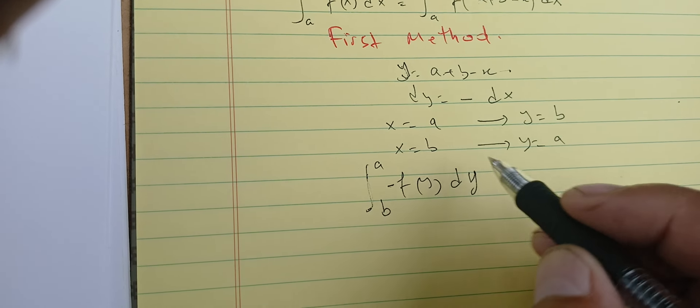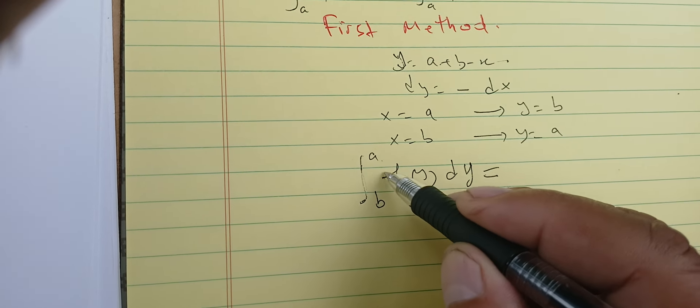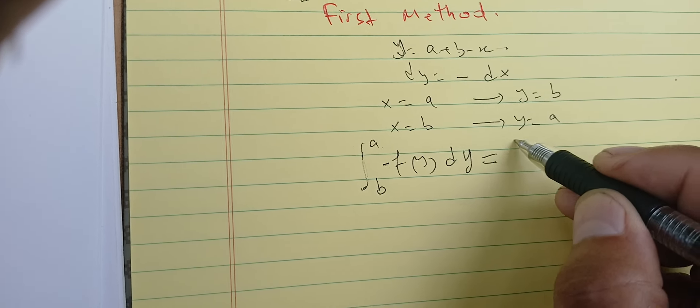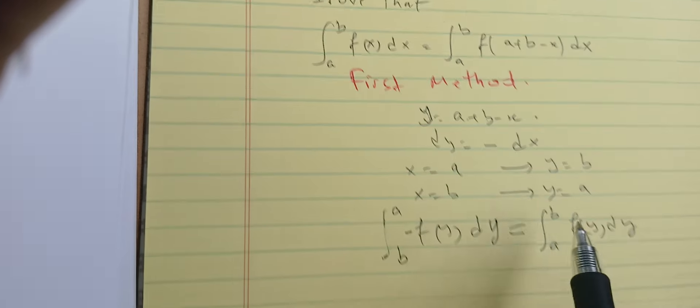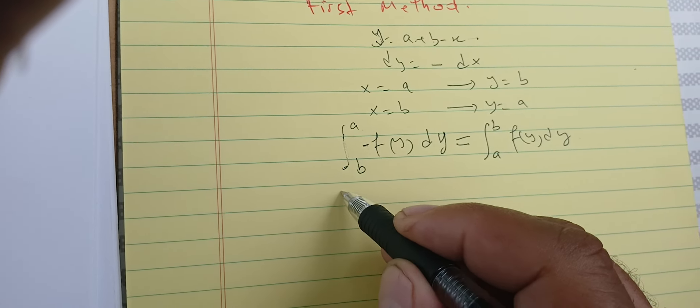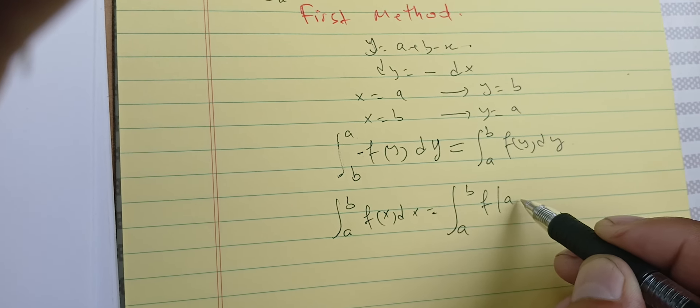Therefore we have the integral from b to a of f(y) times minus dy. That minus sign lets us swap the bounds, giving us the integral from a to b of f(y) dy. Since y is just a dummy variable, we can rename it to x, giving us the integral from a to b of f(x) dx, which equals the integral from a to b of f(a+b−x) dx.